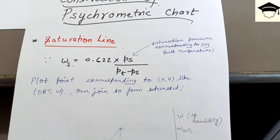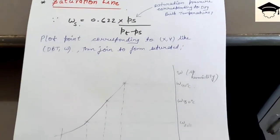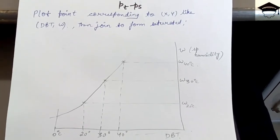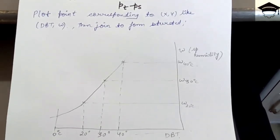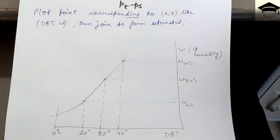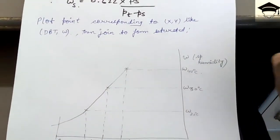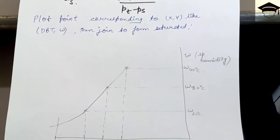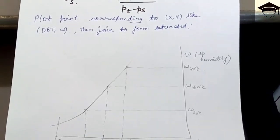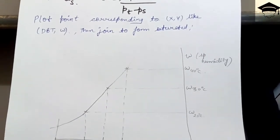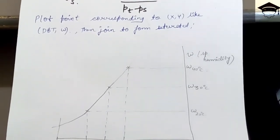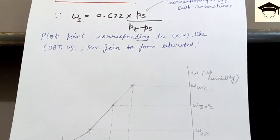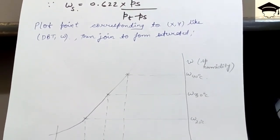You arbitrarily select dry bulb temperatures — for example 20, 30, 40, 50 degrees Celsius. I suggest taking values in 5 to 10 degree Celsius gaps, such as 20, 25, 30 or 20, 30, 40, 45, and so on. Then find the saturation pressure corresponding to each of these temperatures from the steam table.